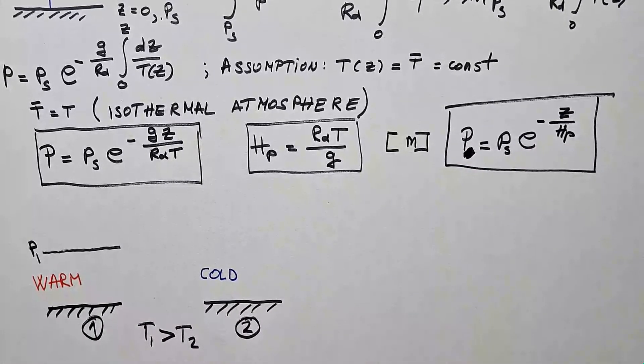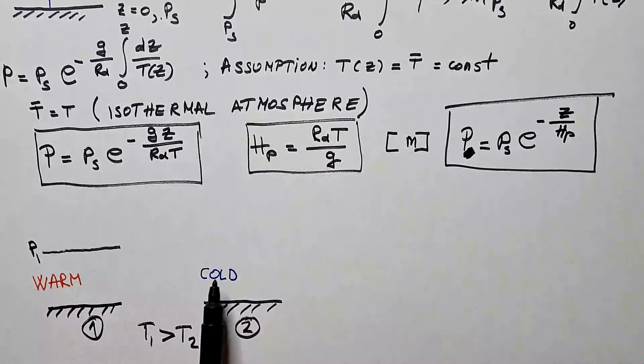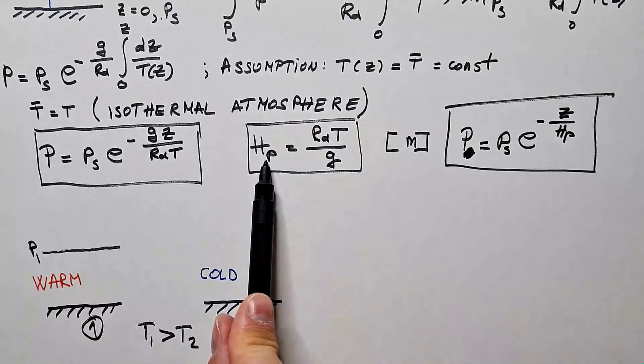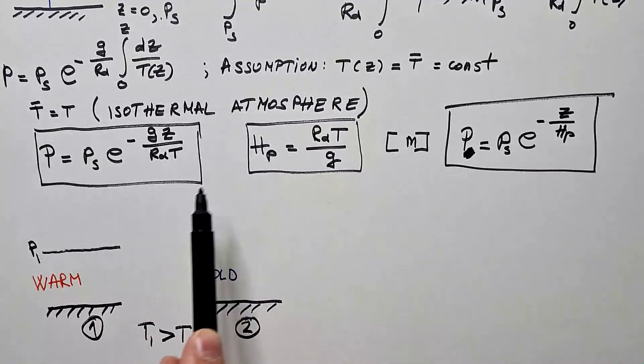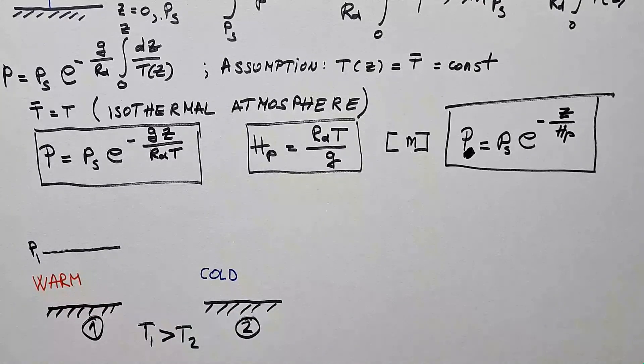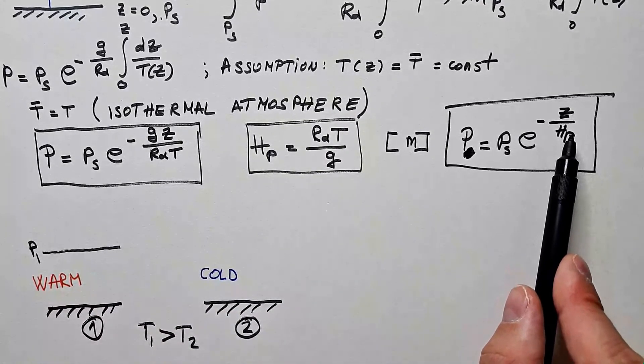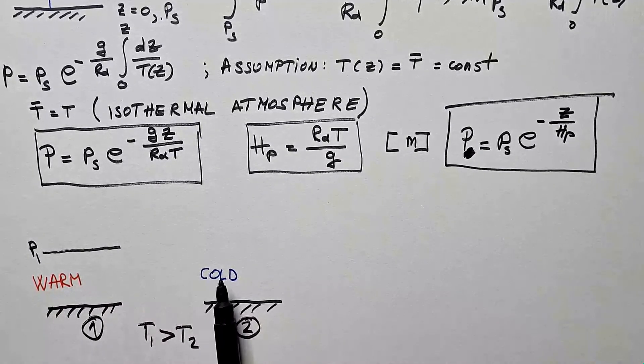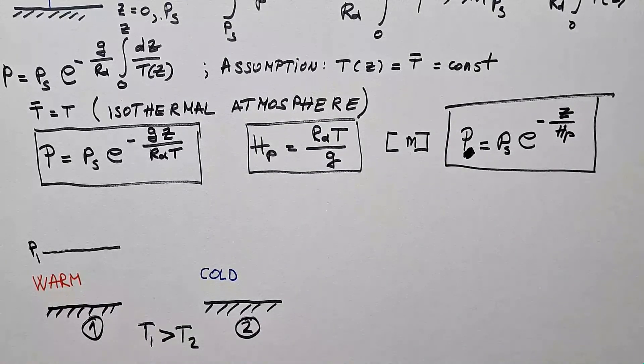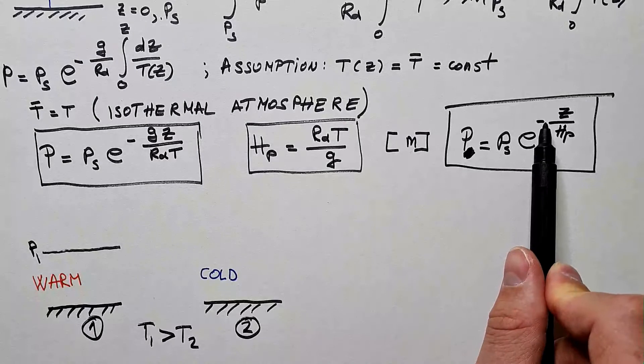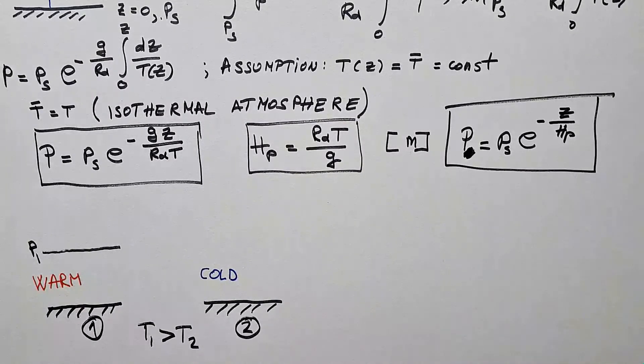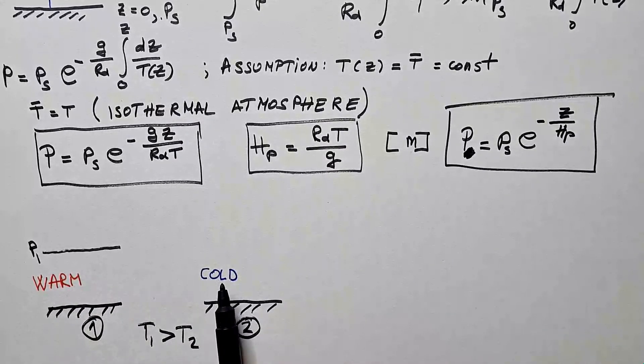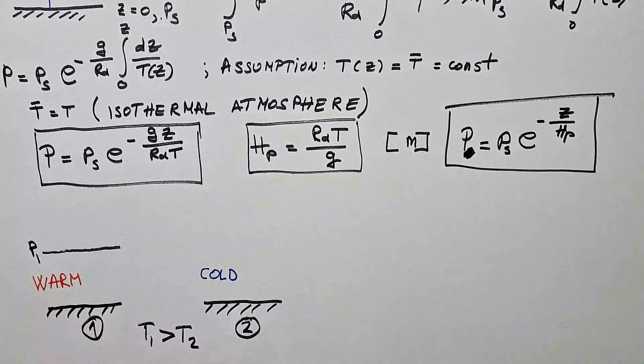If this is warm air, then temperature here is larger than temperature here. But that also means that hp in warm air is larger than hp in cold air. Therefore, e to the negative z over hp is smaller in warm air than it is in cold air. And therefore, e to the negative z over hp is large in warm air and small in cold air.